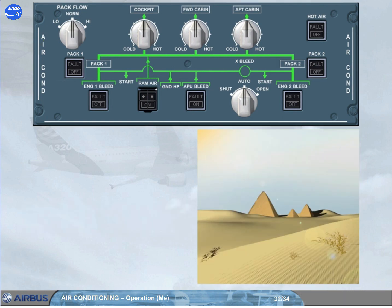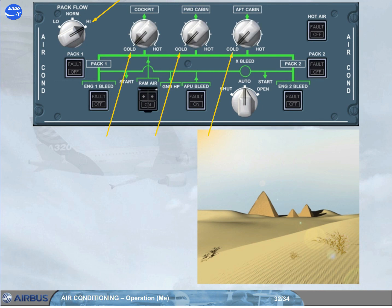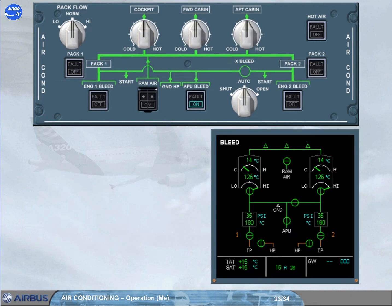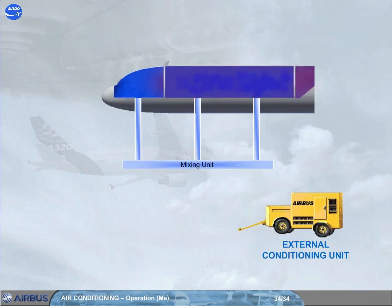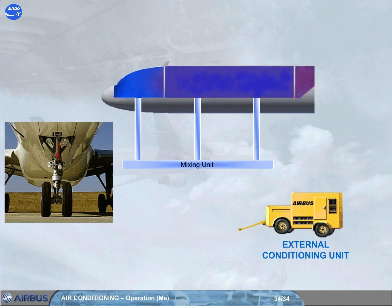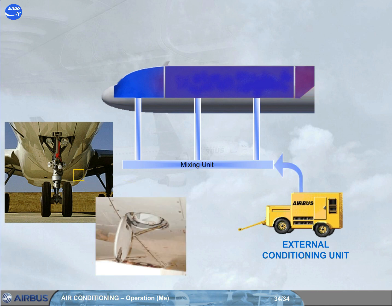Occasionally, with a full passenger load and high ambient temperatures, it may be necessary to select high pack flow and cold to reduce the cabin temperature. Using high pack flow will increase the bleed demand from the engines and use more fuel. Once airborne, the flow selector should be returned to normal and the temperature selectors adjusted as required. After landing and engine shutdown, the system can be set to run from the APU or switched off completely. An external conditioning unit can also be connected via a low pressure connection point on the underside of the aircraft. The low pressure air is fed to the mixing unit and then into the three zones.